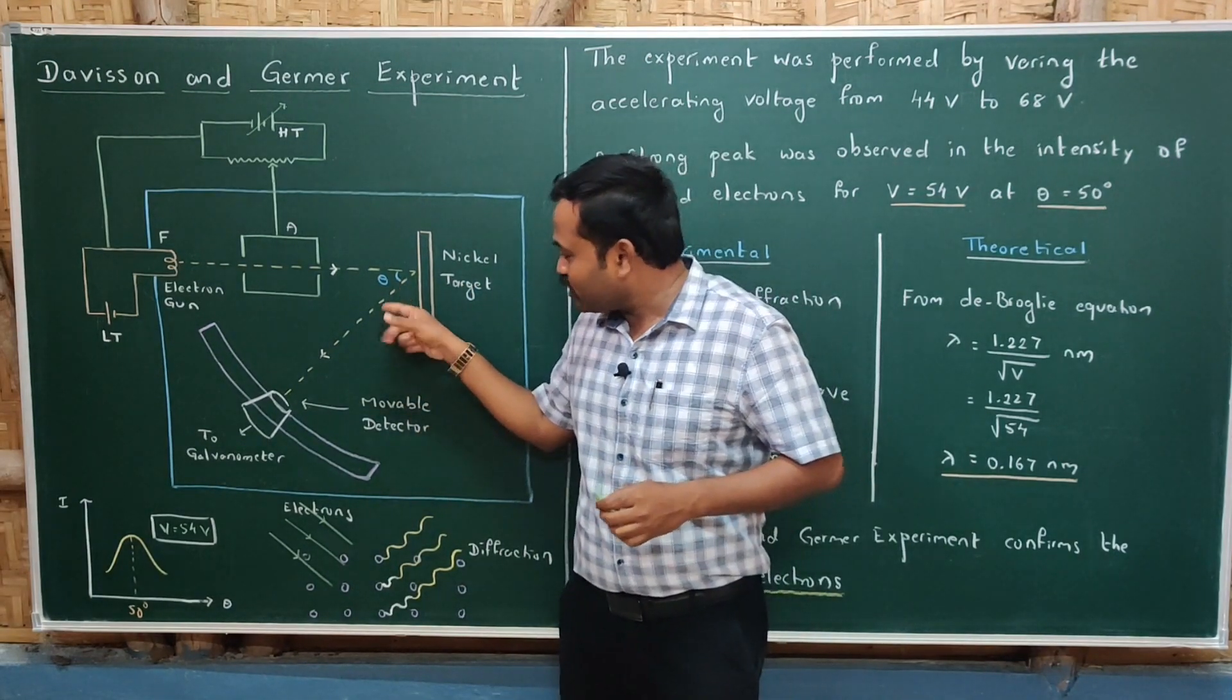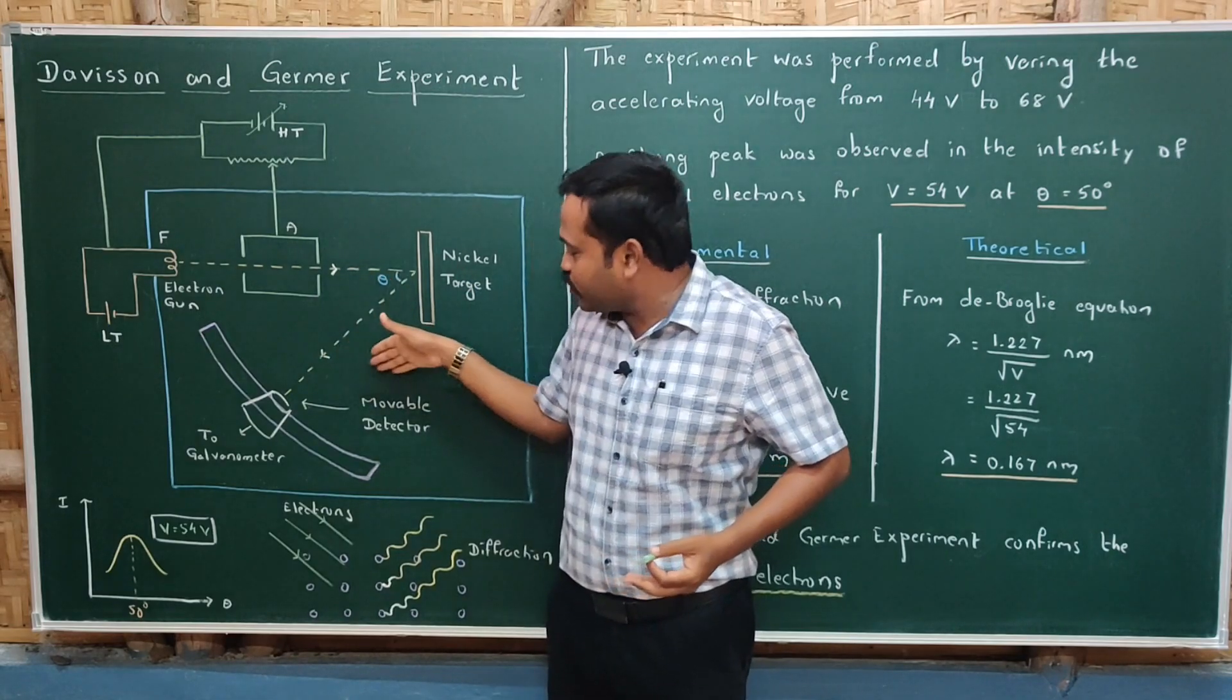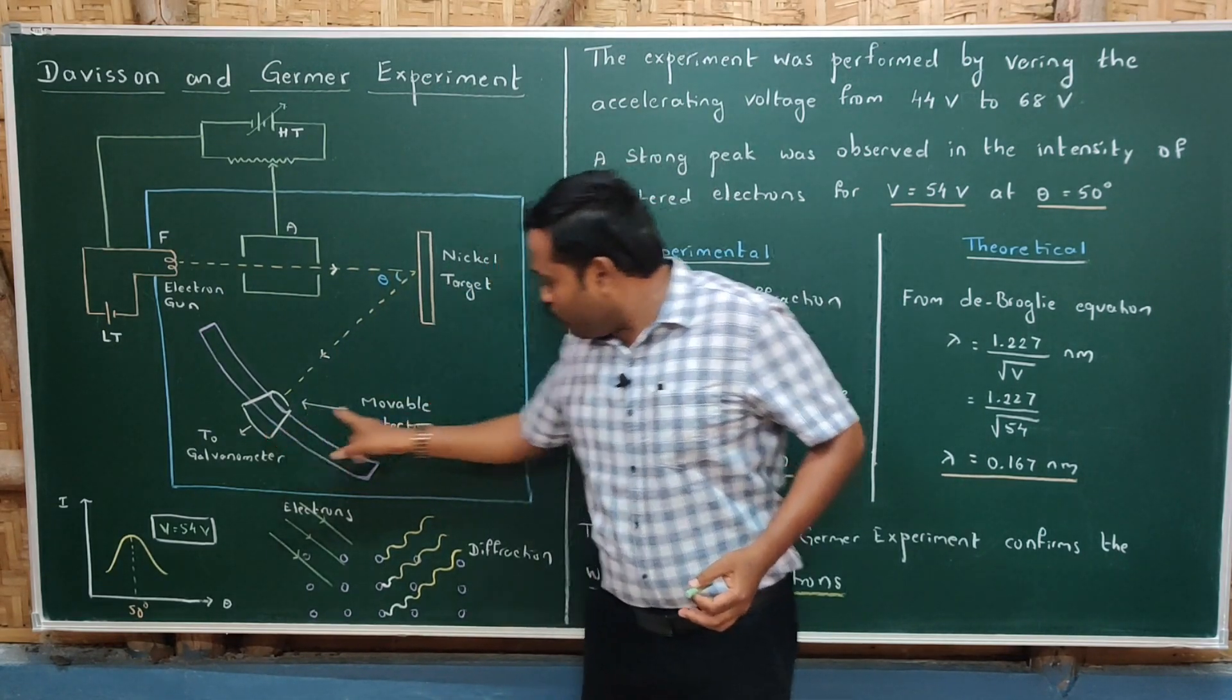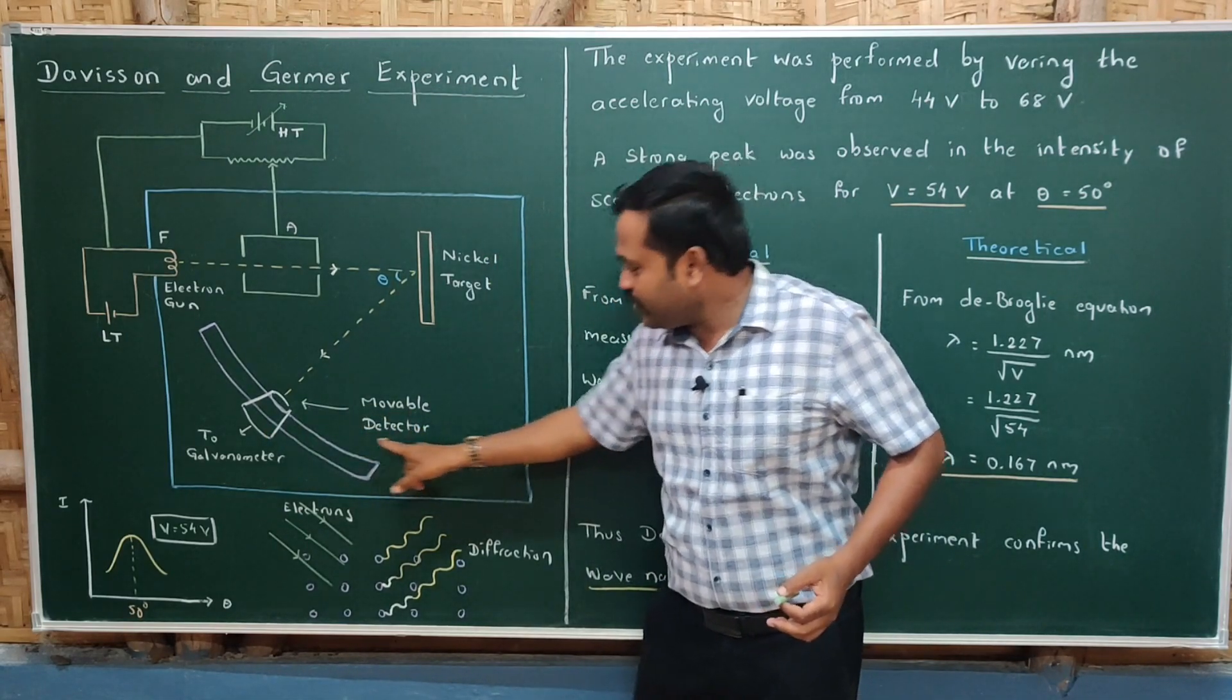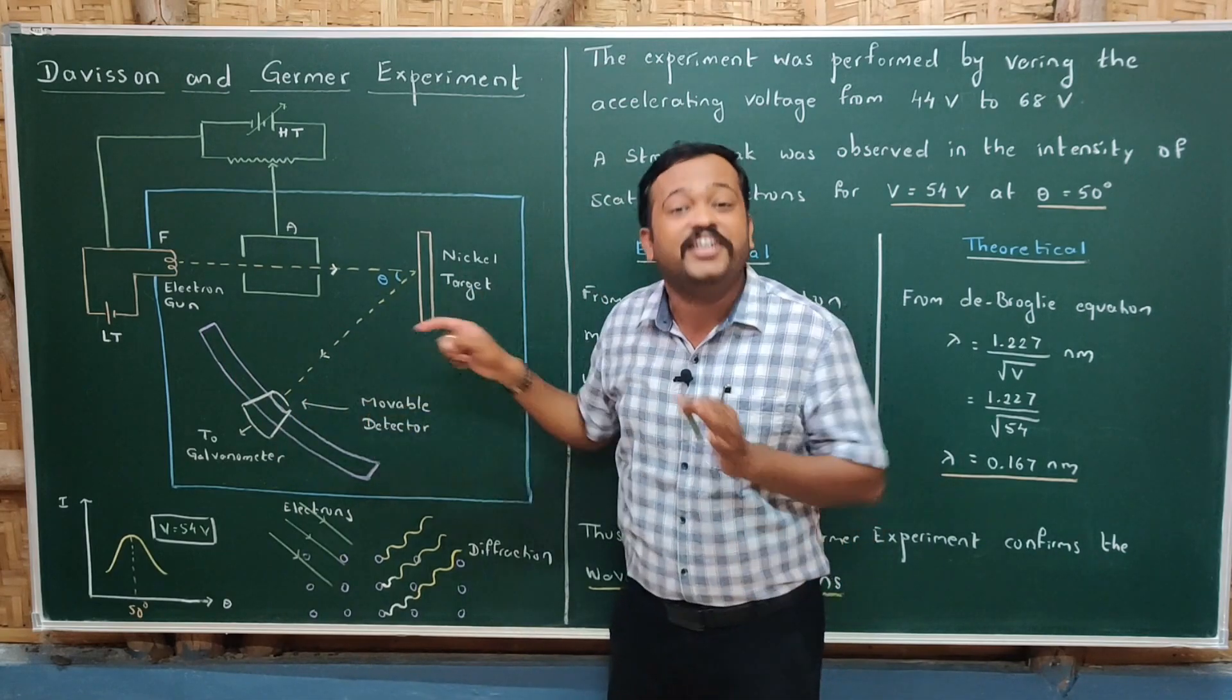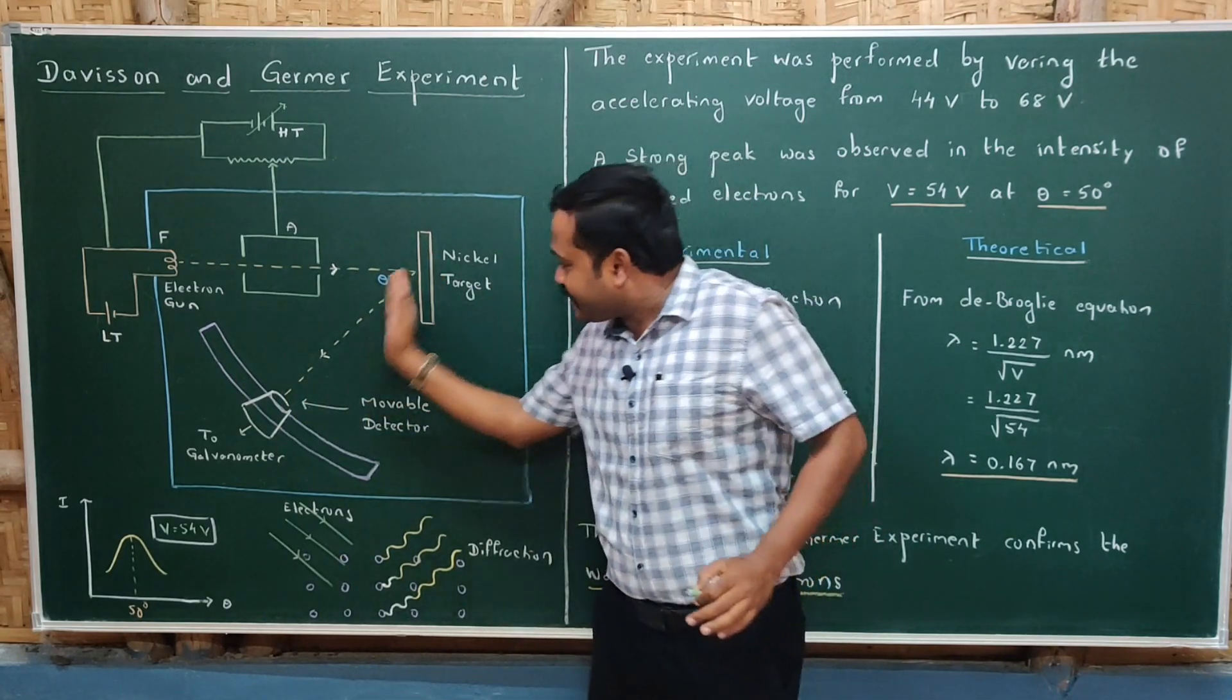The electrons are scattered in all directions by the atoms of the crystal. A movable detector with a galvanometer is moved on a circular scale to detect the intensity of scattered electrons at different scattering angles.